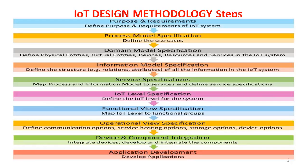The operational view specification defines the communication operations, service hosting options, storage options, and device options — all represented in one place. It specifies how devices communicate with each other, how data is sent and analyzed, what storage options are available, and what device options are used.